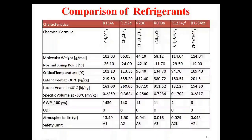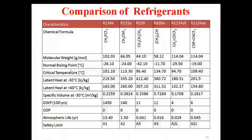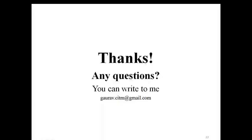Next is comparison of refrigerants. We have compared different properties such as molecular weight, normal boiling point, critical temperature, latent heat, specific volume, GWP, ODP, atmospheric life, and safety group. For example, the normal boiling point for R134A is −26.1°C, meaning it will start boiling at this temperature at atmospheric pressure. Thank you. Any questions can be written to gorg.catem@gmail.com.